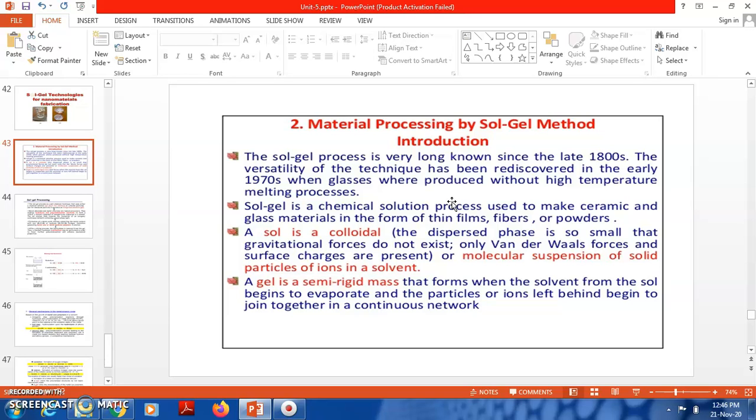The sol-gel is a chemical solution process used to make ceramics or glass materials in the form of very thin films. Sometimes we can develop fibers or in the form of powders also. A sol is where colloidal dispersed phases are very small that gravitational forces do not exist.